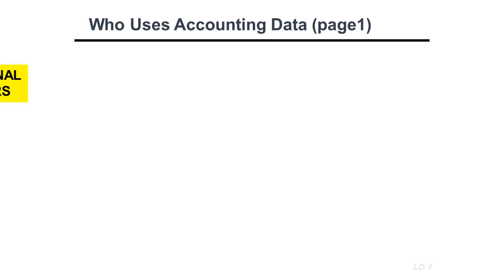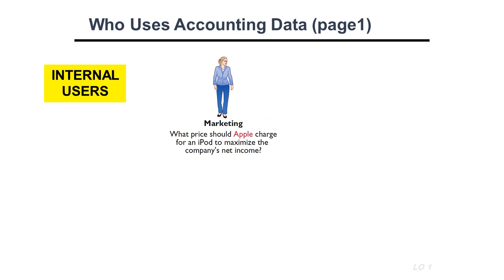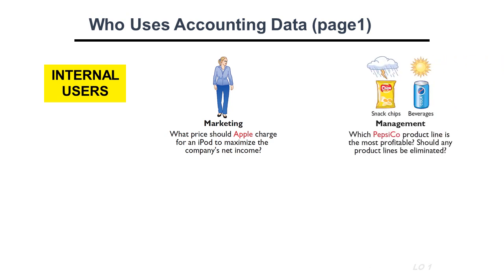Who uses accounting data? Internal users, such as all the people from inside the company. For instance, the marketing department — before launching any product into the market, the marketing people need to check the accounting data to know how much they should price the product to maximize their net income, make more profit, or be more competitive. We also have management, who need to check accounting data to know which product to invest more in and which product to eliminate.